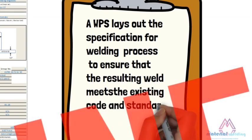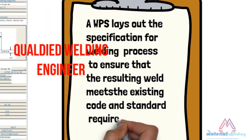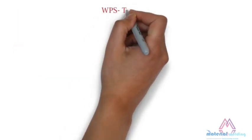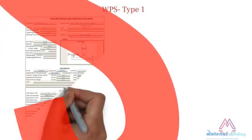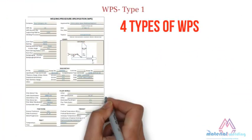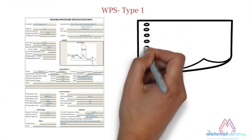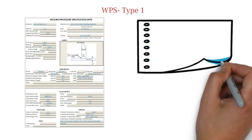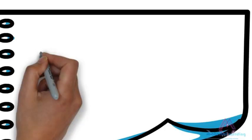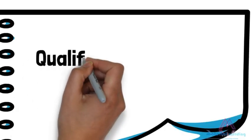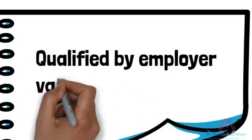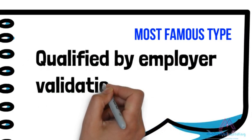A WPS is qualified by a qualified welding engineer. There are four types of WPS; the difference between them is how they are qualified. The first type of WPS is validated by the employer performing the testing as per code or standard.